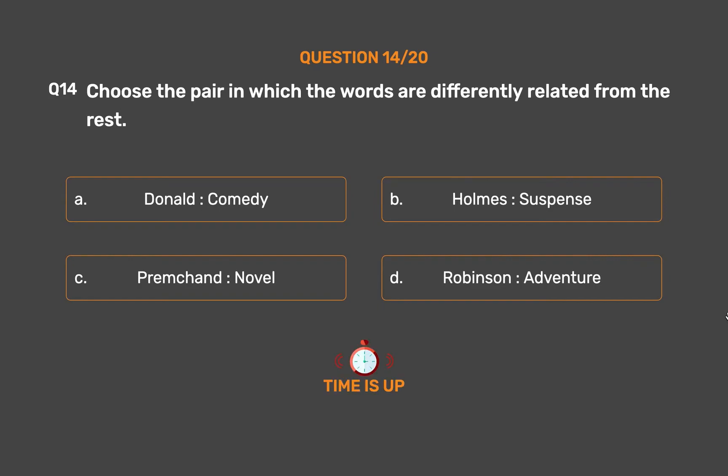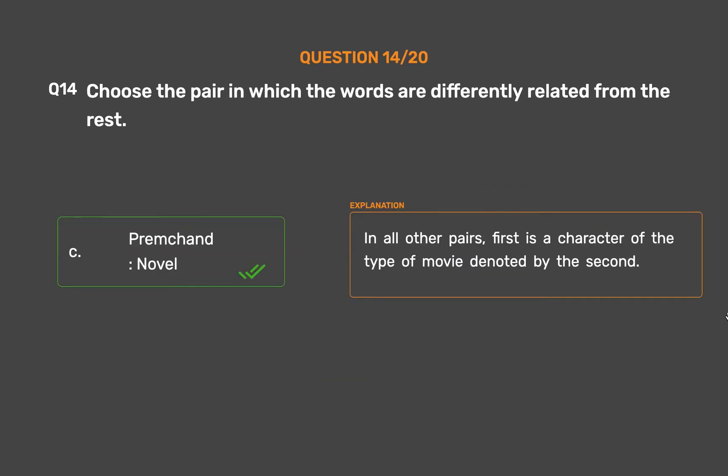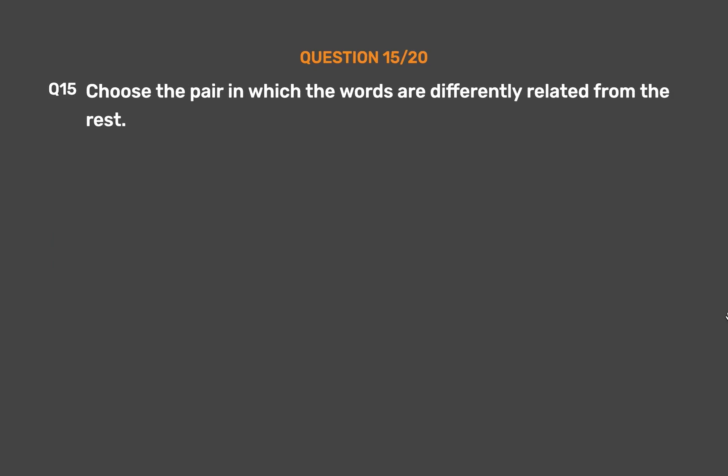The correct answer is Option C: Premchand, Novel. In all other pairs, the first is a character of the type of movie denoted by the second.